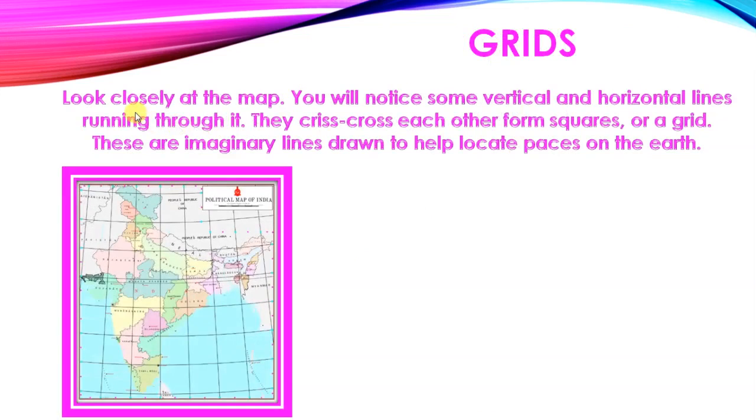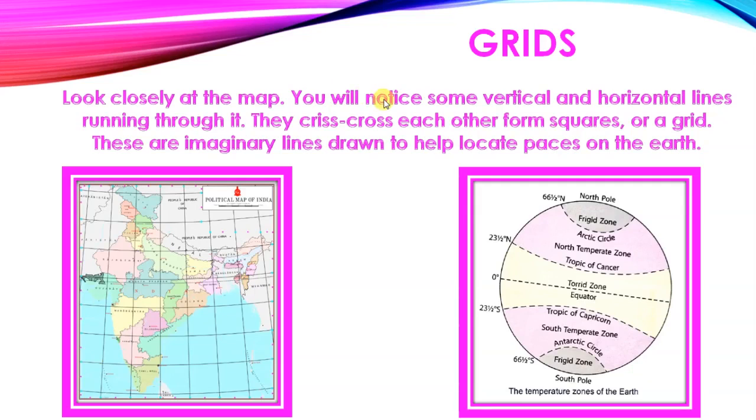Grid. Look closely at the map. You will notice some vertical and horizontal lines running through it. These are the vertical and horizontal lines. These criss-cross each other to form squares. These crisscross each other form, this is square, or a grid. These are imaginary lines drawn to help locate places on the earth.